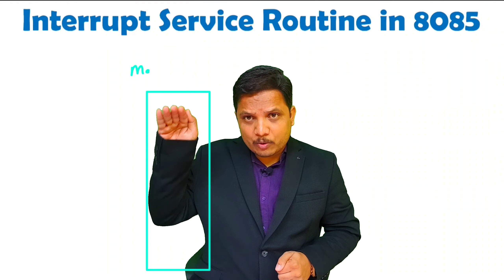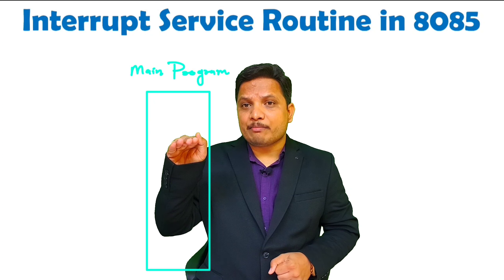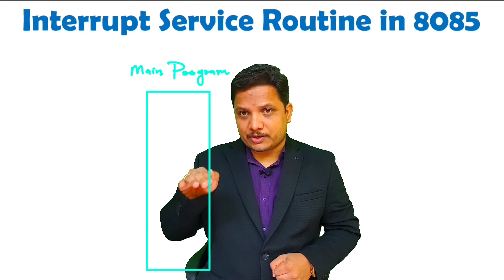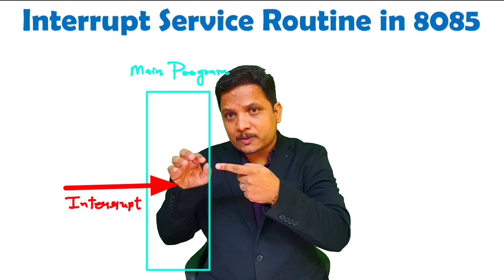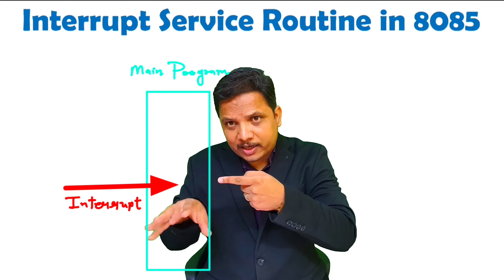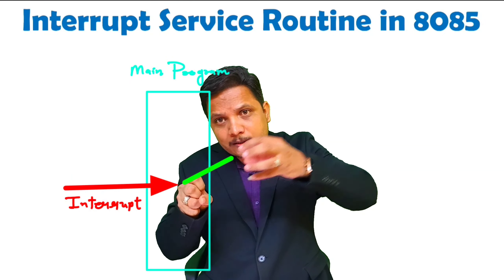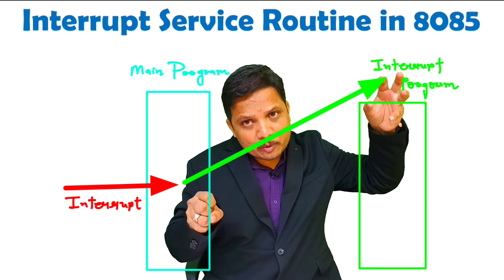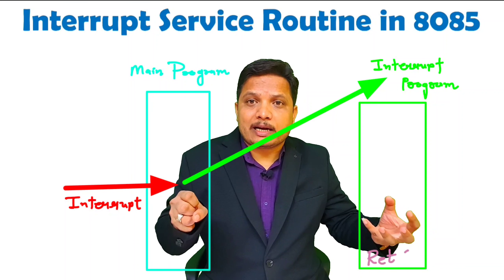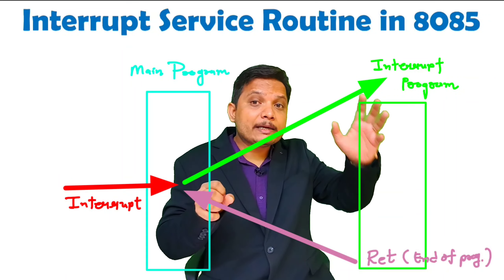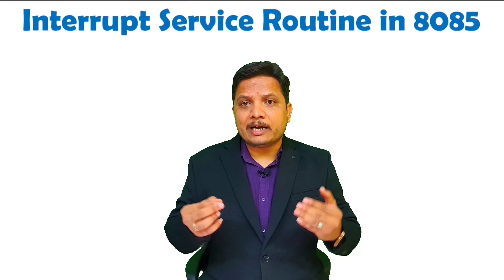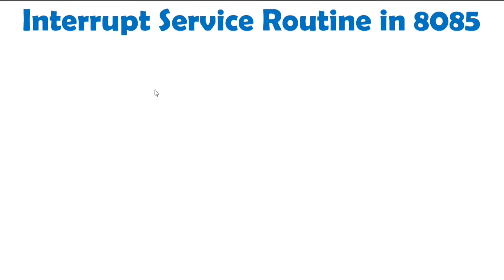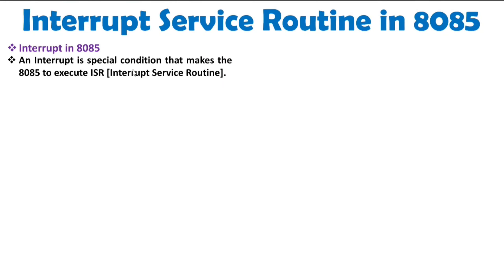Let's say we have a main program being executed by the microprocessor step by step, one instruction at a time. During this execution, an interrupt arrives. When the interrupt comes, the microprocessor will execute the current instruction first. After that, it transfers control to the interrupt service program. Once that interrupt service program finishes executing, the microprocessor transfers control back to the main program. That is the interrupt service routine.